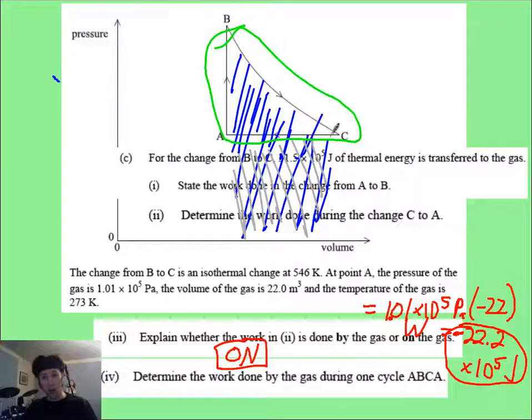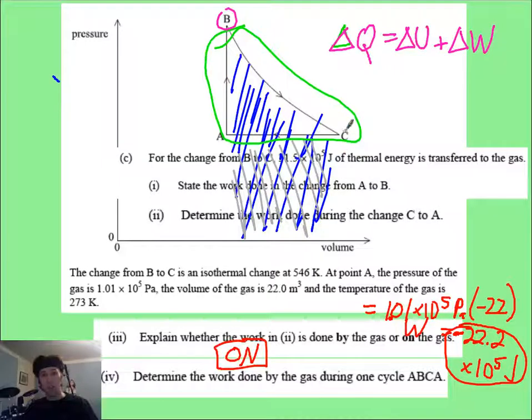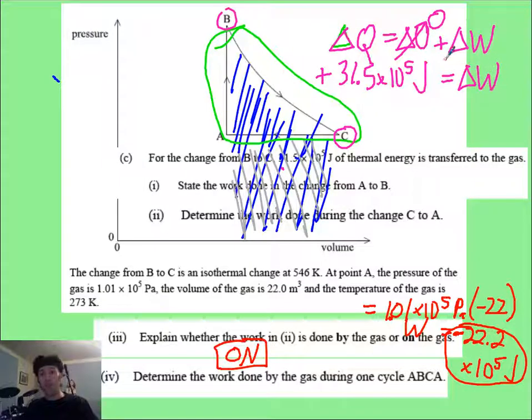Now you need to find out first how much work is done from B to C. You do that using the first law of thermodynamics. Let me change this to delta Q equals delta U plus delta W from B to C. Now they tell you that's an isotherm. So there can be zero change in internal energy because there's no change in temperature. And they also tell you that you put in, I just covered it up, but you put in 31.5 times 10 to the fifth joules, positive. And so, boom, that is what your work is.